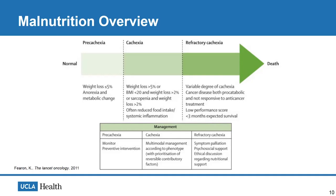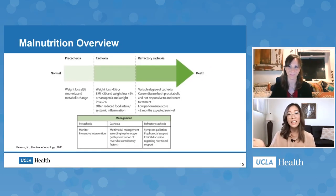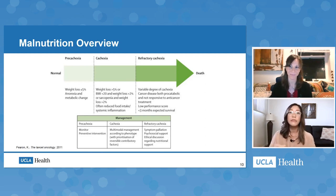In this bottom image, they outline recommendations for management under each phase. In pre-cachexia, there's a focus on monitoring and preventative intervention — for example, a nutrition consult. In the cachexia phase, the focus is on management of reversible factors: physical therapy interventions, nutrition support, and perhaps medications. In the refractory stage, there's a focus on symptom palliation, psychosocial support, and weighing the risks and benefits of nutrition support. You'd see more aggressive interventions in the cachexia phase and less in the refractory stage.